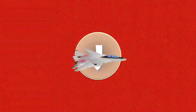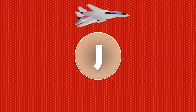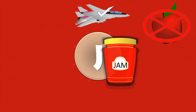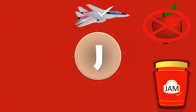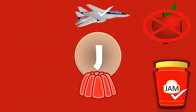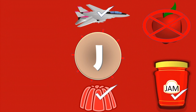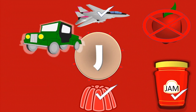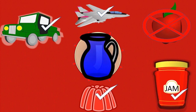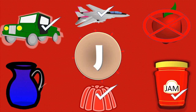J. J for jet, correct, yes. J for apple — no, it's wrong. J for jam, correct, yes. J for jelly, correct, yes. J for jeep, correct, yes. J for jug, correct, yes.